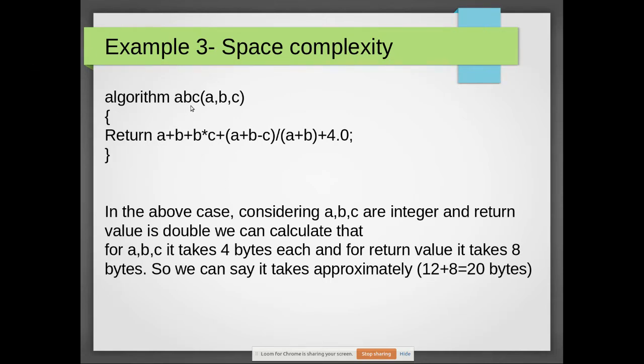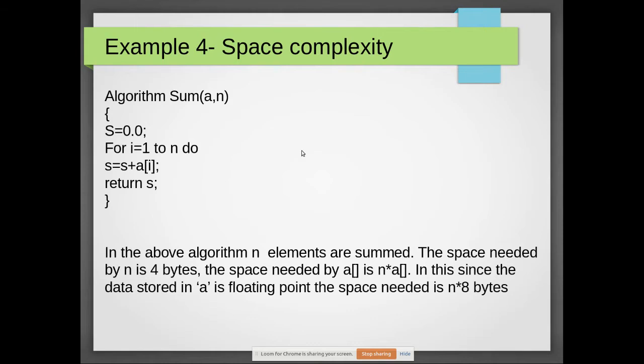Example 3 has a function named ABC where you pass three parameters, and it adds some values with mathematical operations and returns that value. In this case, ABC has three integer parameters and returns a double value. We can calculate that for three variables it is 3×4=12 bytes, and since it returns a double value, plus 8 bytes, so 20 bytes total.